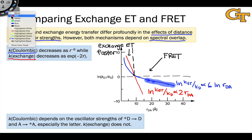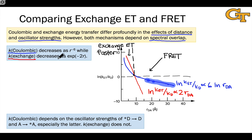One last point worth mentioning about the coulombic versus exchange mechanisms concerns oscillator strengths — related to the transition dipole moment for the transition, how strong or how likely the transition is relative to a classical harmonic oscillator. The coulombic mechanism depends on oscillator strengths, and intuitively this makes sense since it's all about oscillating dipoles. The oscillator strengths of both transitions, D-star to D and A to A-star, are involved. The exchange mechanism does not depend on oscillator strengths, since fundamentally its mechanism pertains to electron exchange rather than oscillating dipoles.